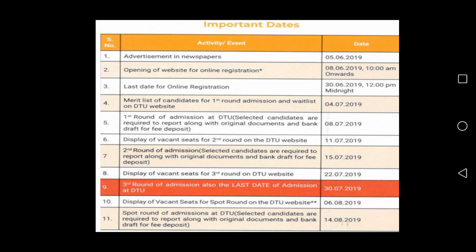Important dates: Opening of website for online registration — 8-6-2019. Last date for online registration — 30th June 2019. Merit list of candidates for first round of admission — 4-7-2019. First round of admission at DTU — 8-7-2019.